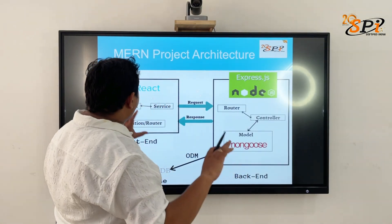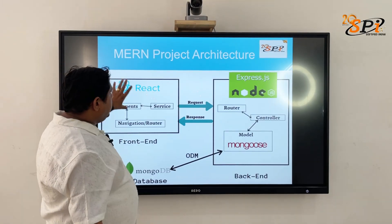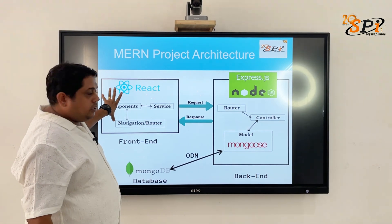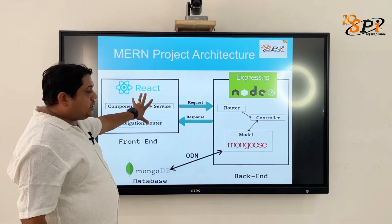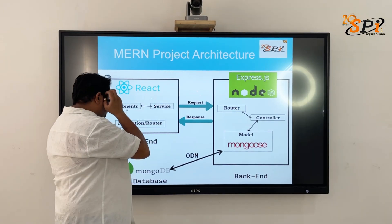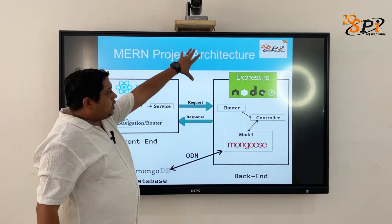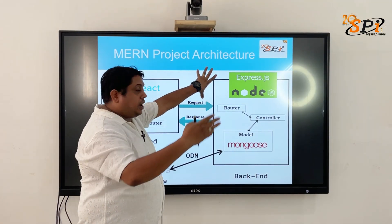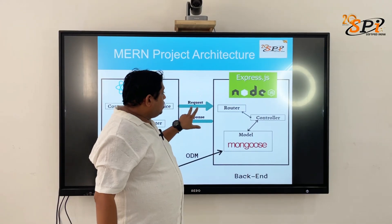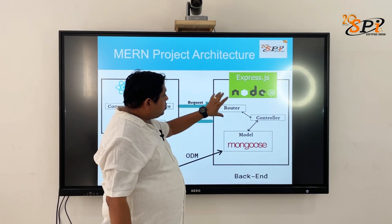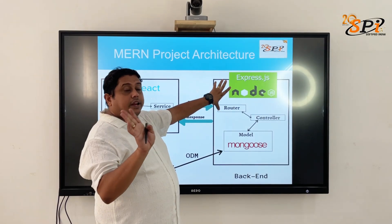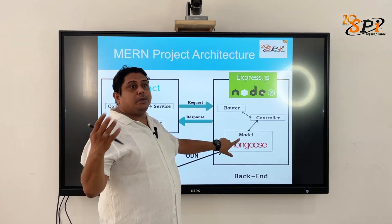Now let's look at the whole MERN project architecture. Your UI interface is developed in React — you can also use HTML, CSS, JavaScript, and Bootstrap for the front end. You send requests to the server side, which is built on Node.js with Express.js on top. Internally there are controllers, which handle routing of requests, and models, which contain the request and response logic.